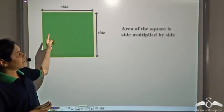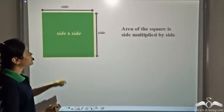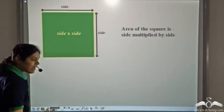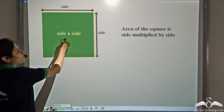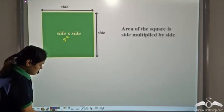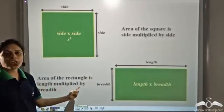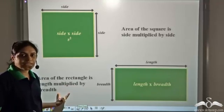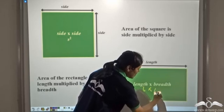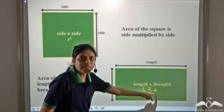We know that area of a square is side multiplied by side. So it is written as side into side. Now using letters, we can write it in an even more concise form as s square. Similarly, for a rectangle, we know that area of a rectangle is length multiplied by breadth. So we can write it in a concise form as l into b, where l stands for length and b stands for breadth.